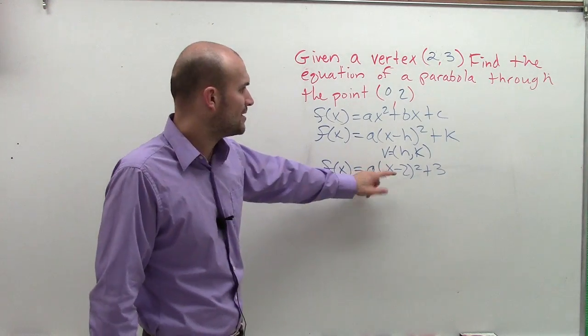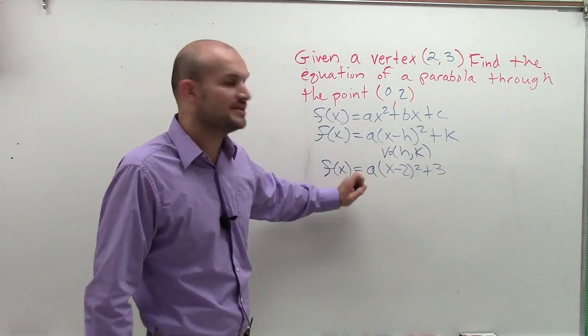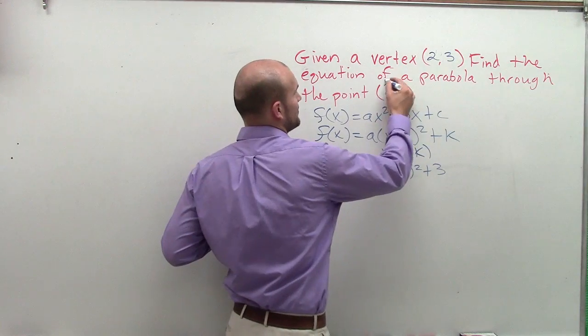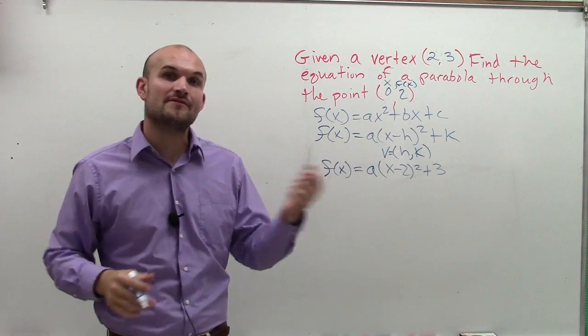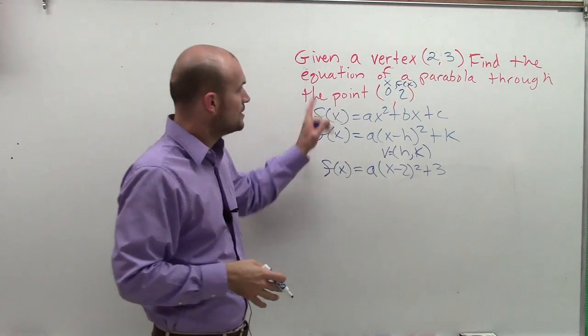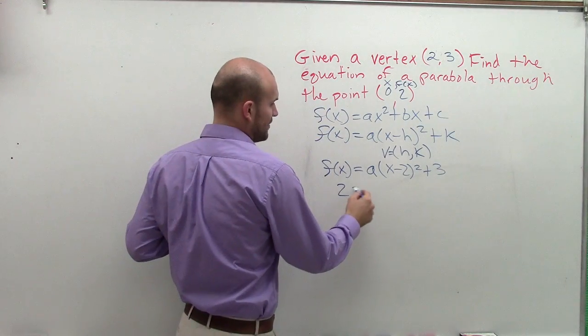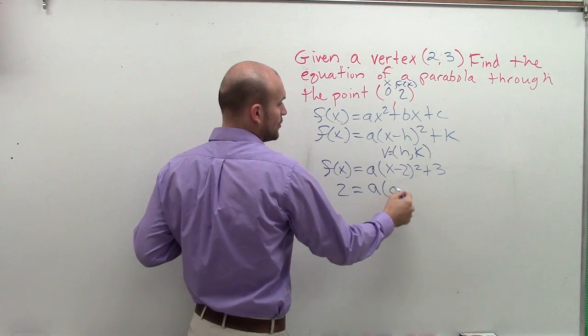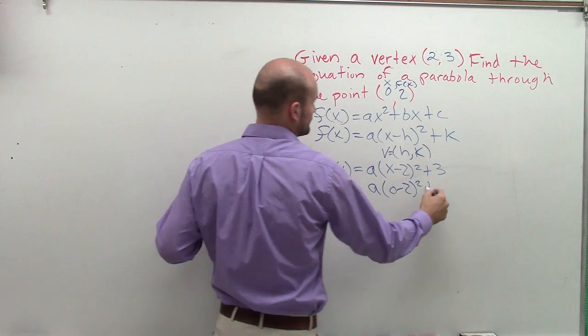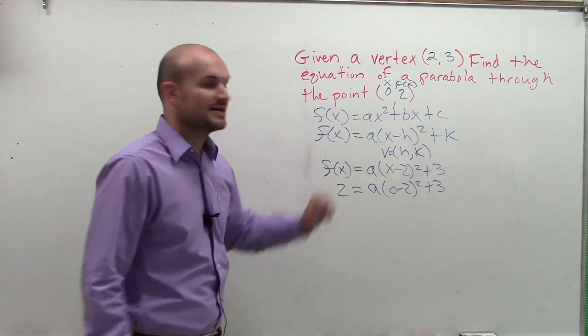Now, remember, I keep on saying x and y. But really, since we're talking about a function, our coordinate points are made up of x and f(x). As x is your input and f(x) is going to be your output. So now what I'll do is I'll plug 2 in for f(x) equals a, which I still don't know. I'll plug 0 in for x. And now I can solve for a.